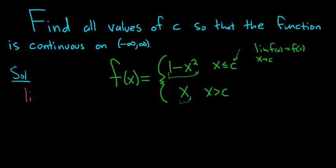We'll start by taking the limit from the left as x approaches c. When we take the limit from the left, x is less than c, so we're going to use the top piece. This will be 1 minus x squared. And to evaluate this limit, we just plug in c, so we get 1 minus c squared.